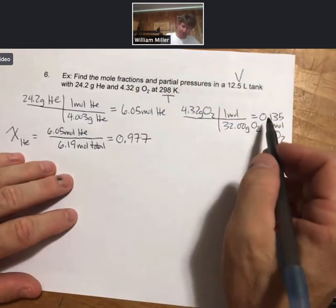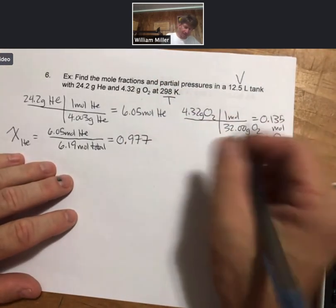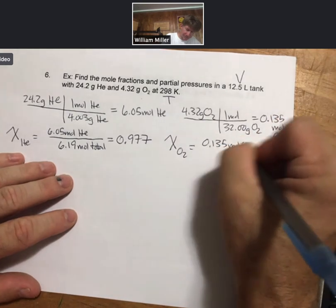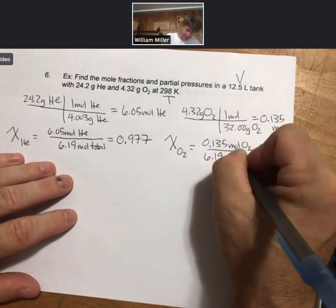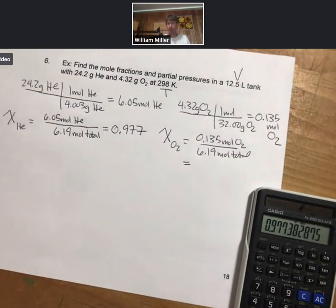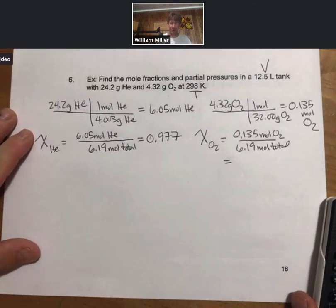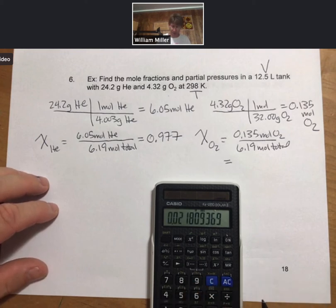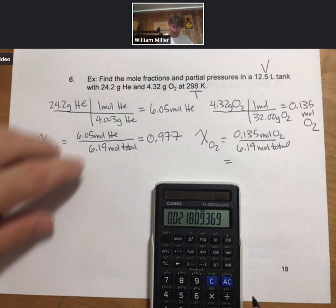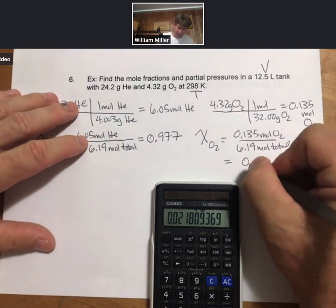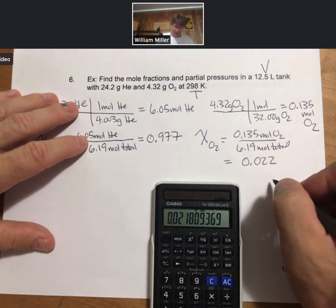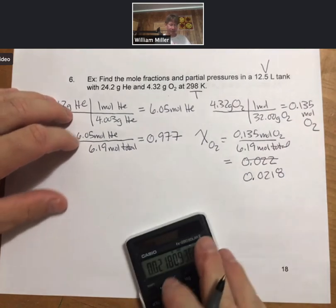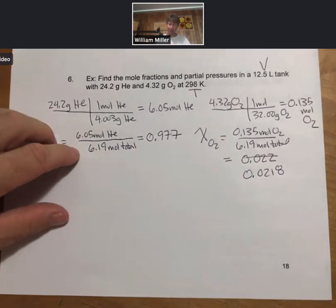And as far as mole fraction of oxygen, you can plug this in, or you could realize that with only two gases, the two fractions have to add up to one. So 0.135 divided by 6.19, 0.0218, 0.022. Now mole fractions, because they have moles over moles, have no units. They are fractions after all.